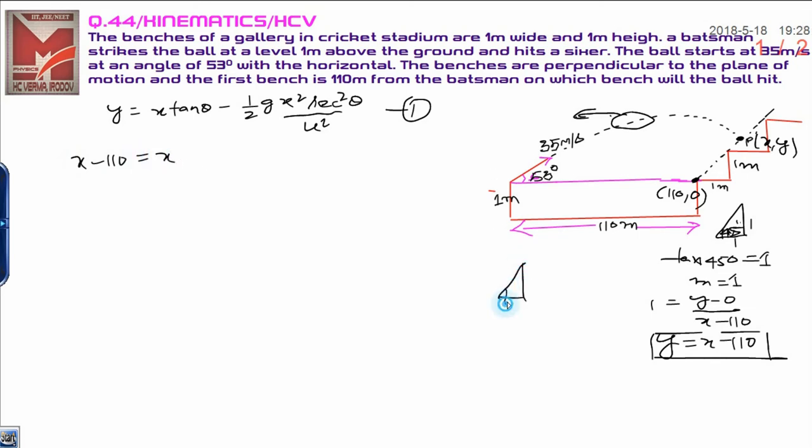You have to use the 3-4-5 triangle here. Tan 53 degrees means 4 upon 3. That is why you have to put here 4 upon 3 minus half g, suppose that's 10, and x squared as it is. Secant squared theta, that is 1 by cos theta. Cos is 3 by 5, that is 5 by 3 whole squared, divided by u is given, that is 35 squared.